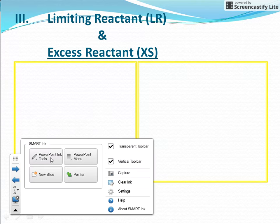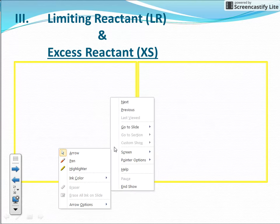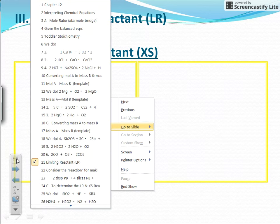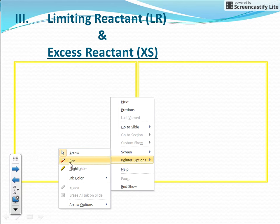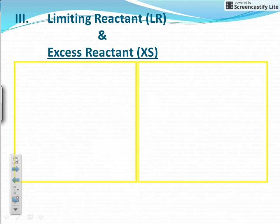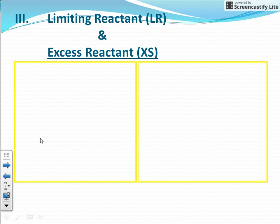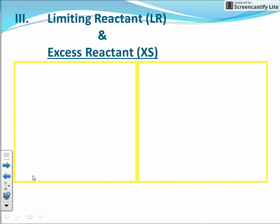I want to introduce the concept of limiting reactant today. In the last couple of chapters we've been looking at balancing equations and basic stoichiometry. We learned how to convert from moles of A to moles of B, grams of A to moles of B, moles of A to grams of B, and grams of A to grams of B. We've laid the foundational groundwork for these calculations.